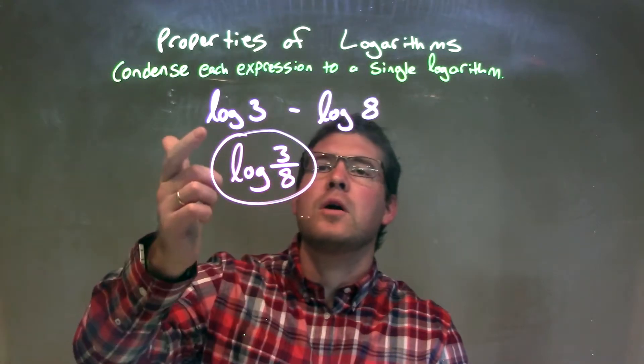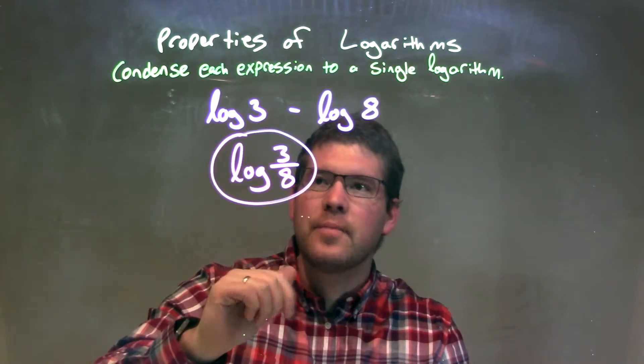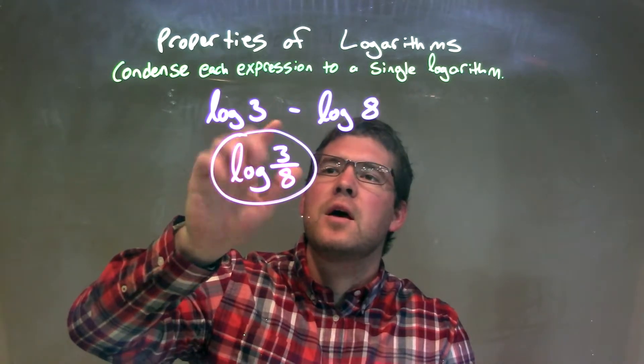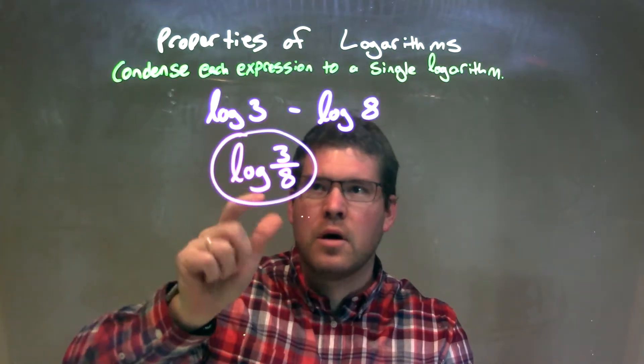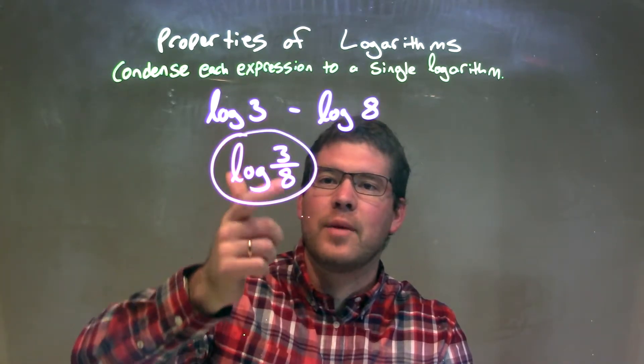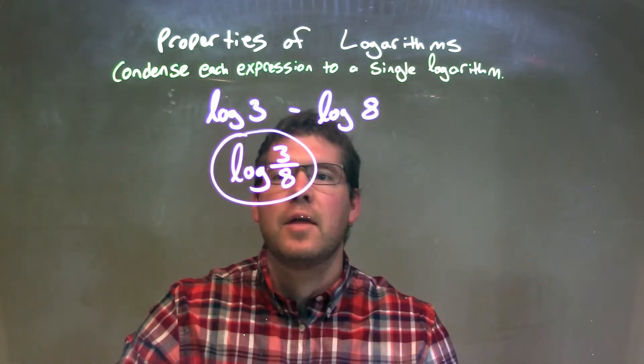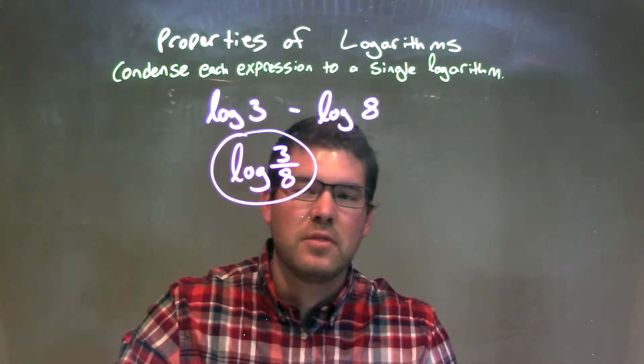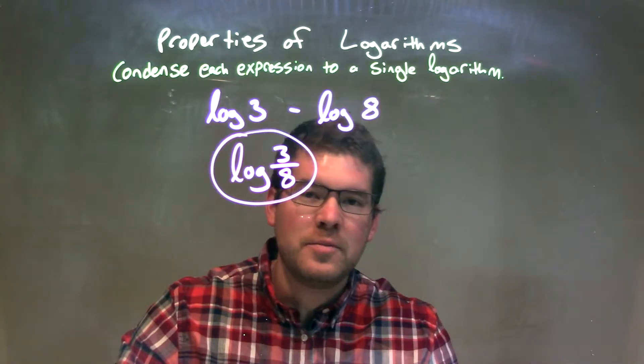Quick recap, we have log of 3 minus log of 8. When we have subtraction there, a log with the same base, we can combine it to be one big log, and we'll take the first number, 3, and divide it by the second number, 8. So, 3 divided by 8, like that. And then we can condense it, like that. And our final answer again is just log of 3 over 8.